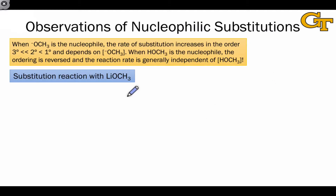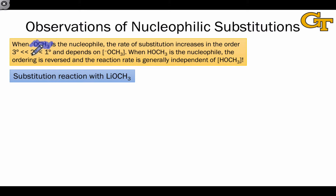Let's begin with some key observations of nucleophilic substitution reactions. The first set of observations involves lithium methoxide, LiOCH3, as the nucleophile. The true nucleophile here is, of course, the methoxide anion. What we find when using this molecule as the nucleophile is that the rate of substitution increases in the order tertiary, secondary, and primary — in other words, primary electrophiles are the most rapid, followed by secondary and tertiary electrophiles, which are essentially unreactive. Additionally, the rate depends on the concentration of methoxide.